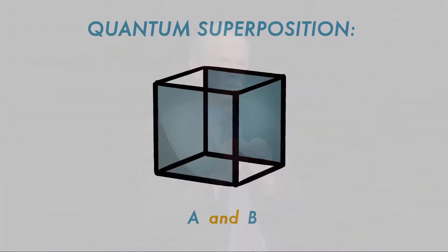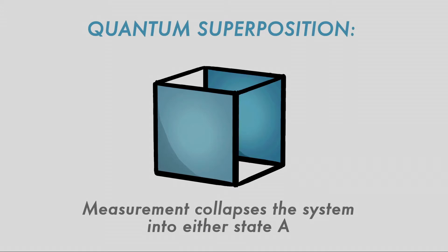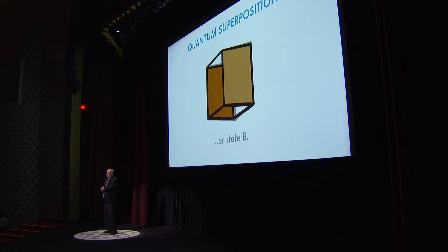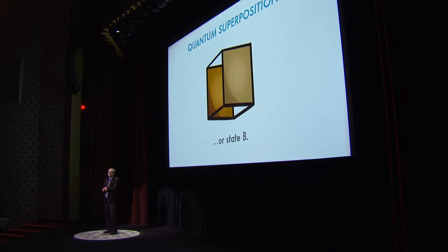Another thing that this particular example illustrates is that in quantum mechanics, it turns out we can make these superpositions, at least on a small scale, but when we actually observe them, they tend to go into one situation or the other. In the example of the box, when we measure it, it goes into one orientation or the other.